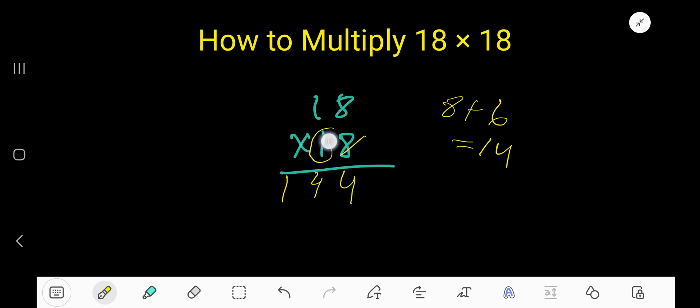Then, start with this one. 1 times 8 is 8. Since 1 is in the second column, the first column will have a placeholder 0 and the product will come here. 1 times 8 is 8. 1 times 1 is 1.